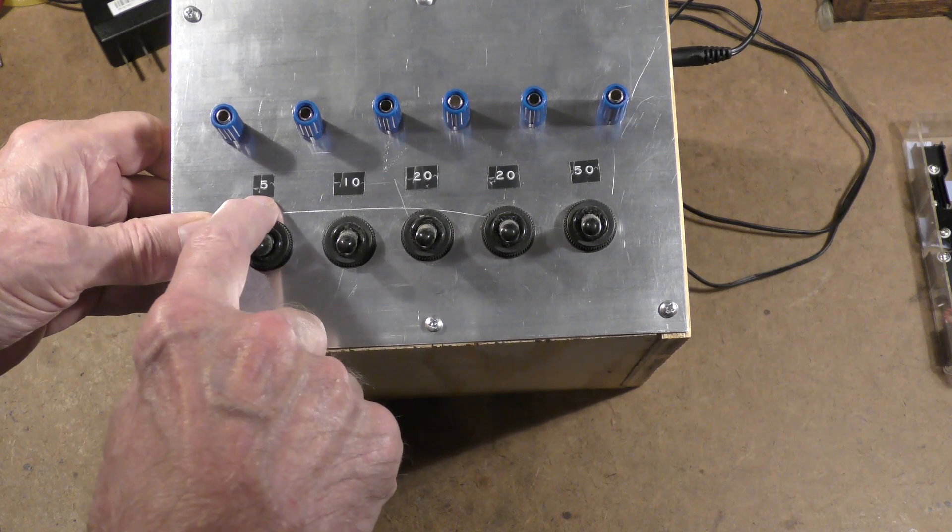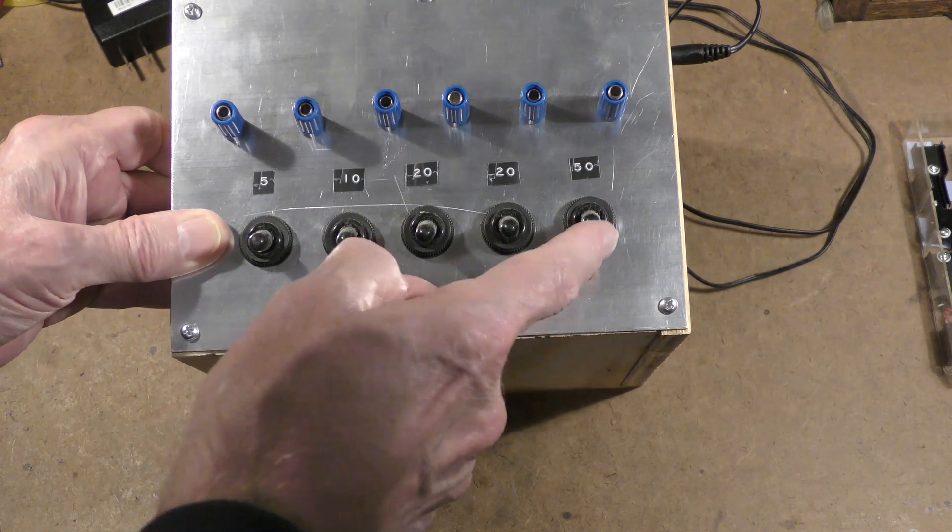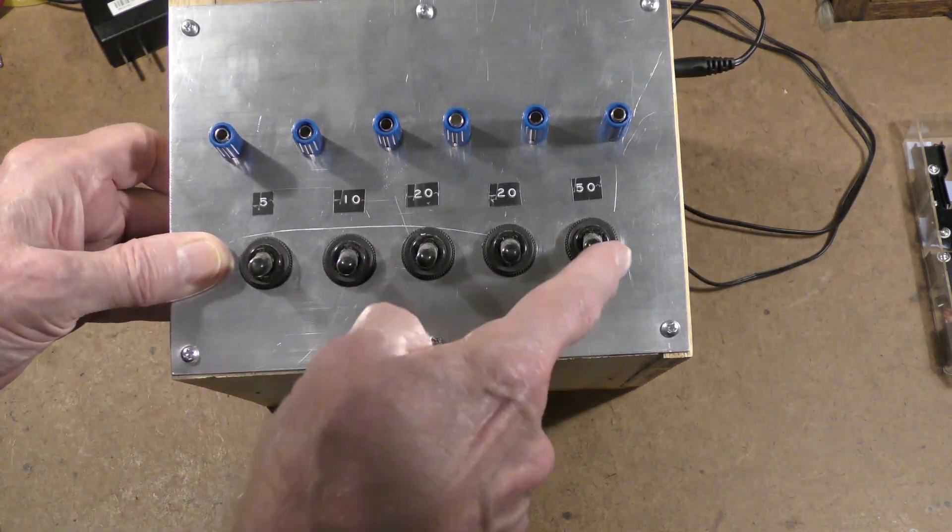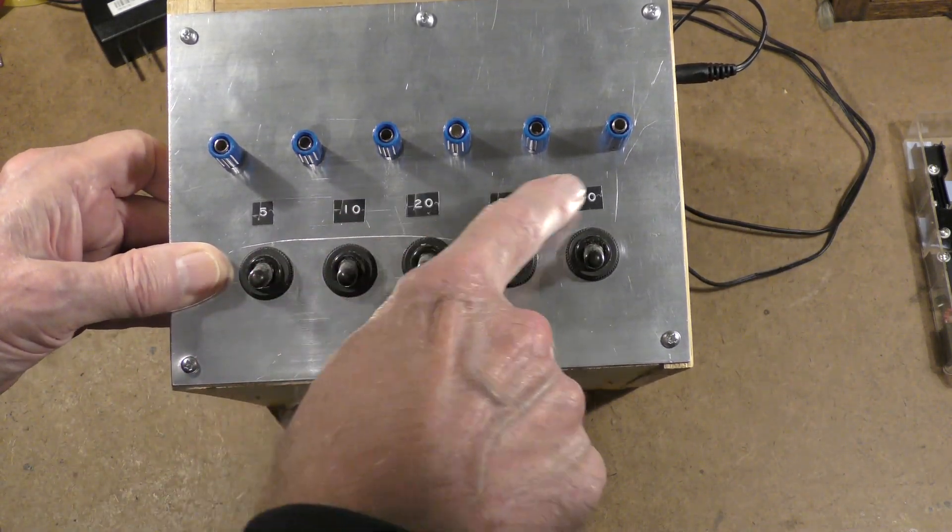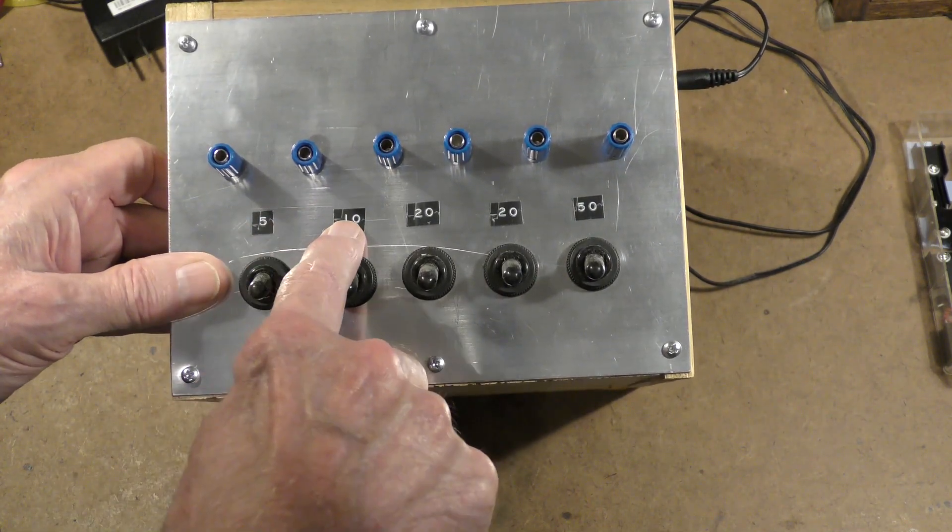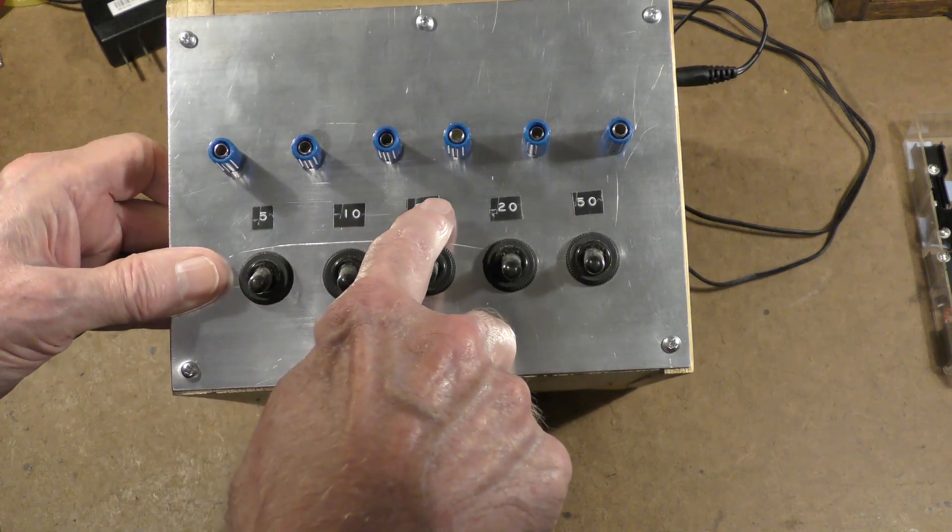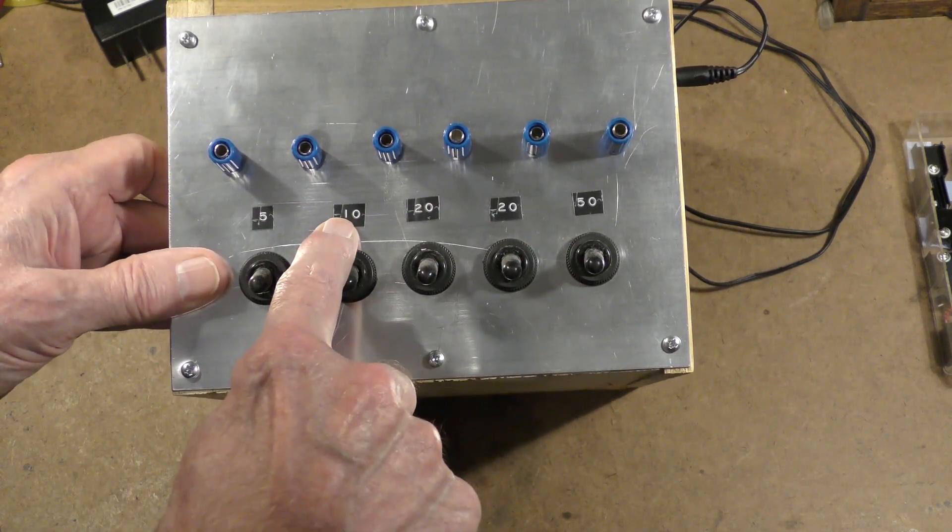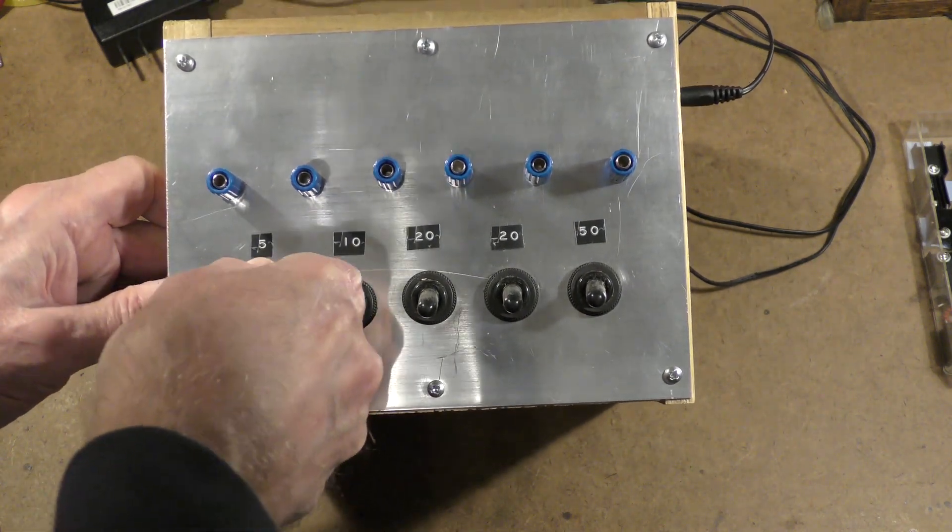As you see, it's six binding posts and five switches, with each switch labeled: 5 ohm, 10 ohm, 20 ohm, 20 ohm, 50 ohm. The idea is that the way this is wired—and I'll show you the schematic in a second—you can basically put all of these in series, or one or more of these in series. For example, you can have 5 ohms and 10 ohms to make 15, or 5 and 20 and 20 to make 45, or 50 and 20 and 10 to make 80, and so on. You do that with these switches.